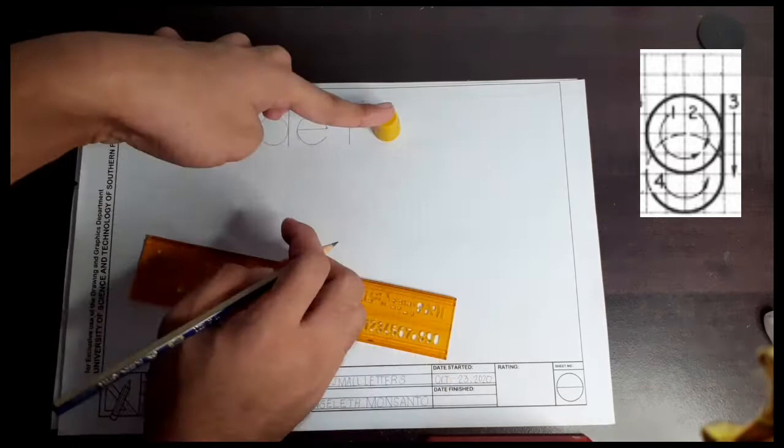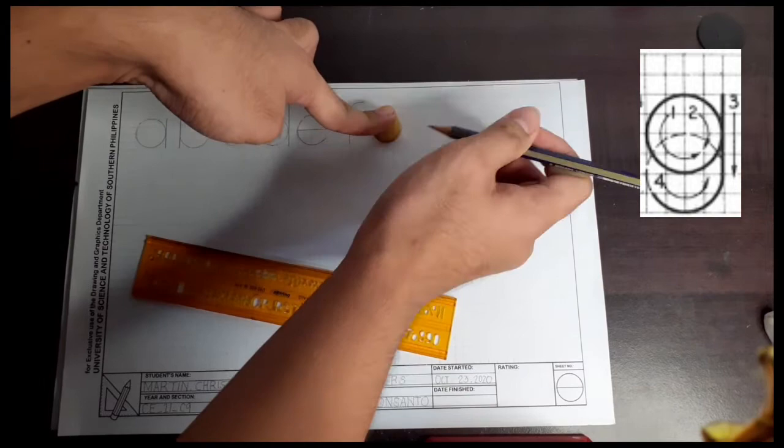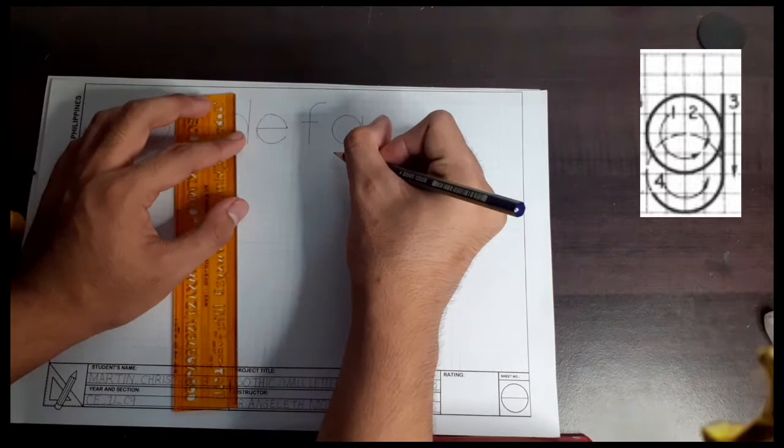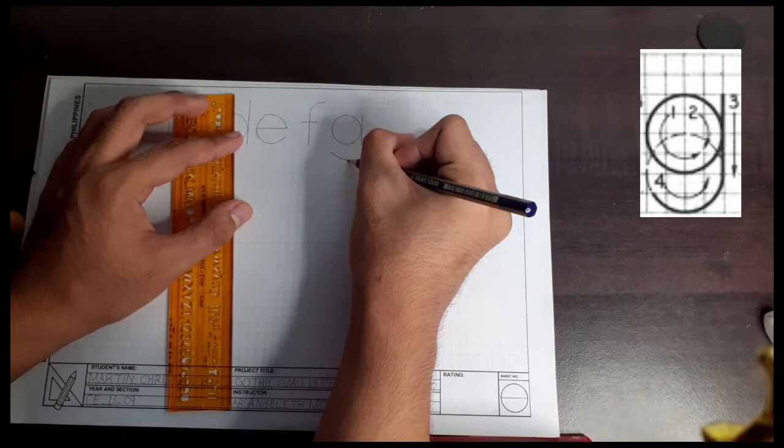Using this cup, letter G is drawn just the same with the circles of letter A, B, and D. A straight line is then followed going downwards. Then lastly is its hook-like figure below.